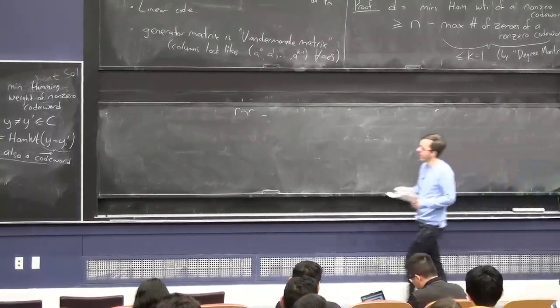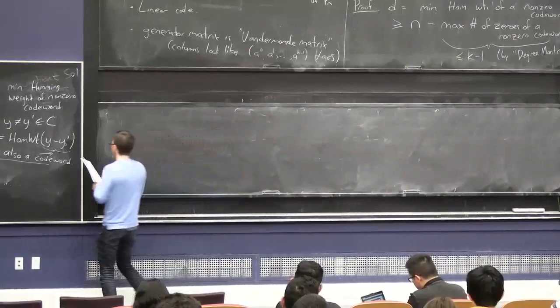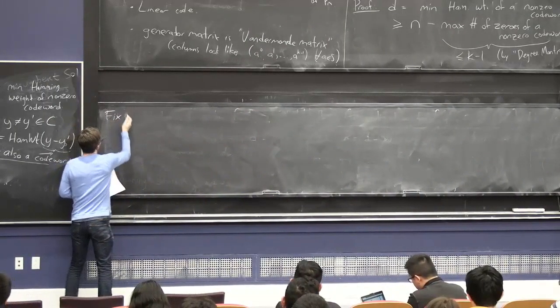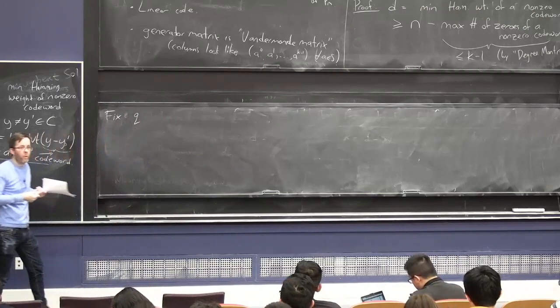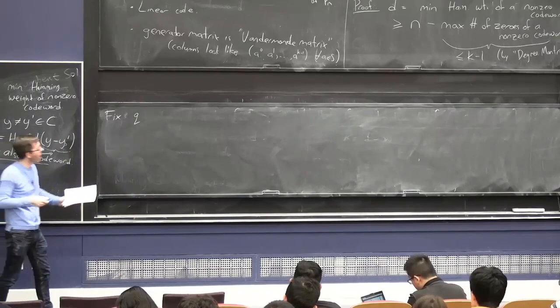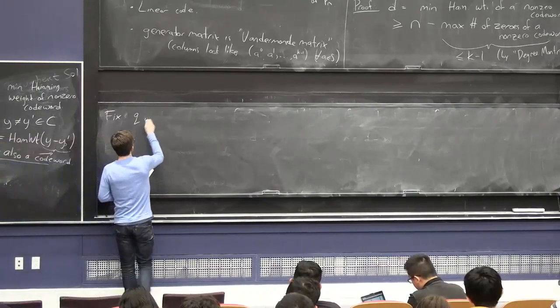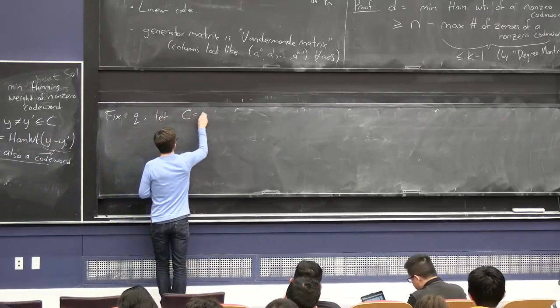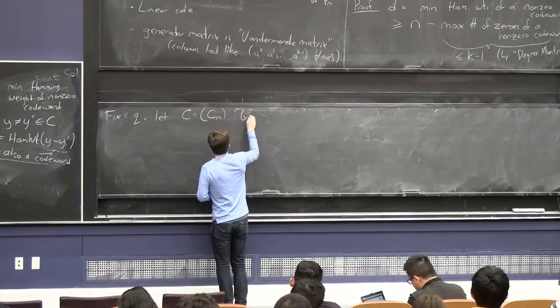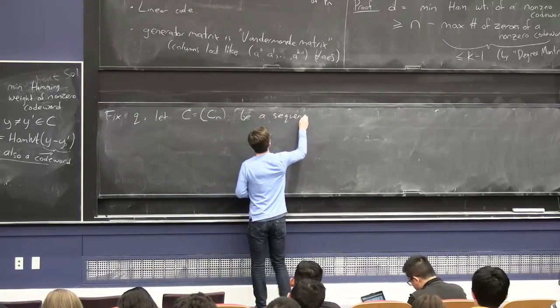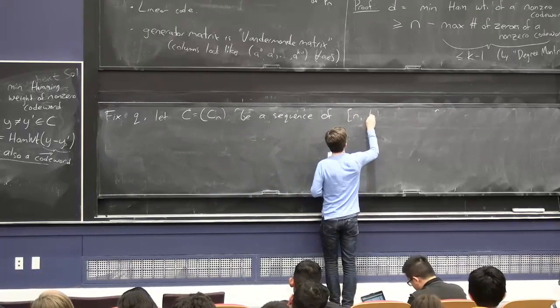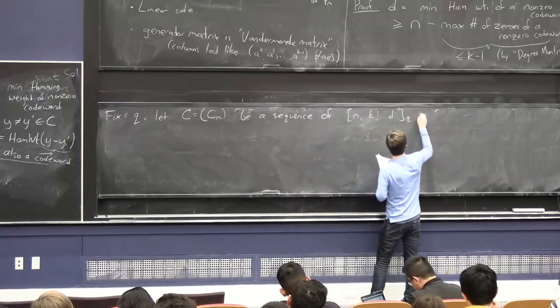OK, so let me expand a little bit on what I mean by good rate and good minimum distance. What you really want is not just one fixed code with one fixed value of n like 300, but you want a family of codes parameterized by n. So for a fixed q, let's let curly C be a family of codes cn, be a sequence of n, k, d, q codes.